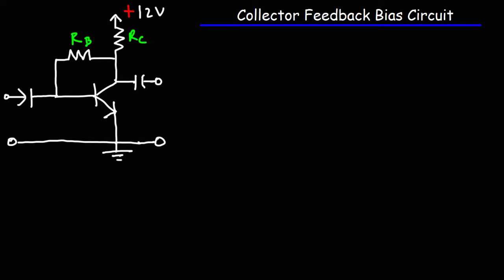In this video, we're going to talk about how to solve the collector feedback bias circuit. We have a 12-volt voltage supply source — that's our VCC value. We're going to set RB equal to 300 kilohms and RC to 1 kilohm. We're going to set our HFE value for the transistor, which is the same as beta, to 250.